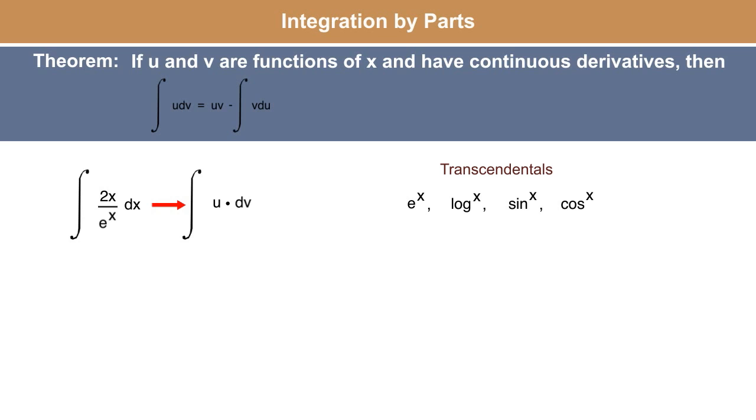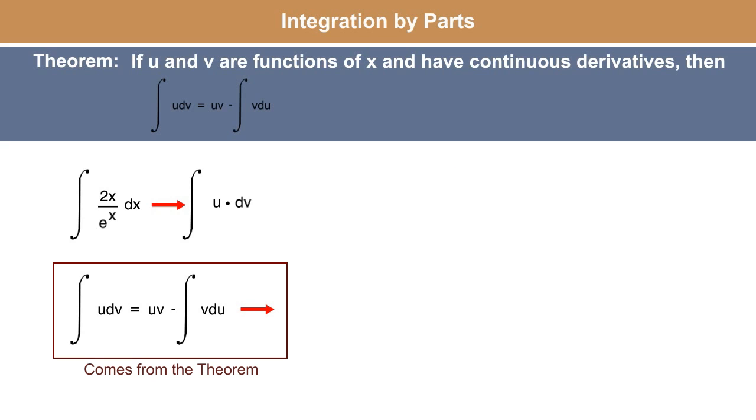Set it up as an integration by parts problem. What you are ultimately shooting for is an integral of the form u times dv, where you let u equal some part of this original integral and then dv be the part that's left over.